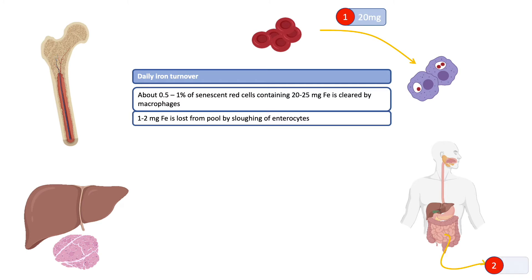The only way in which iron loss occurs physiologically is by sloughing of enterocytes that contain iron from the intestinal lining. About 1 to 2 mg of iron is lost daily through this route. In females, an additional average loss of about 1 mg daily, or about 20 to 30 mg monthly, occurs through menstrual loss.